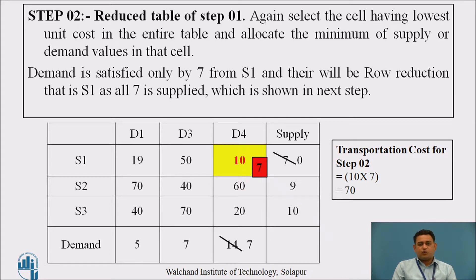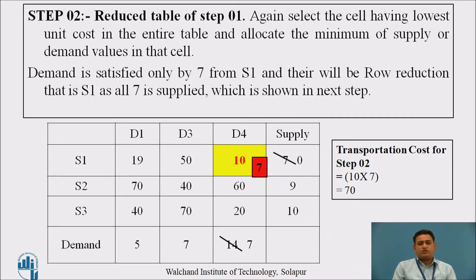This is the reduced table of step 1. Again, we select the cell with the lowest unit cost in the entire table. The least cost is now 10, lying at destination D4 and source S1. The demand of D4 is 14 but the availability at S1 is only 7, so only 7 units are supplied, leaving a remaining demand of 7 at D4. As S1 is exhausted, there is a row reduction, seen in the next step.